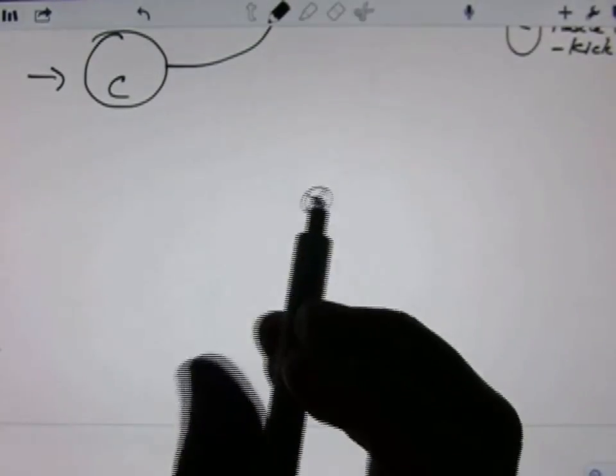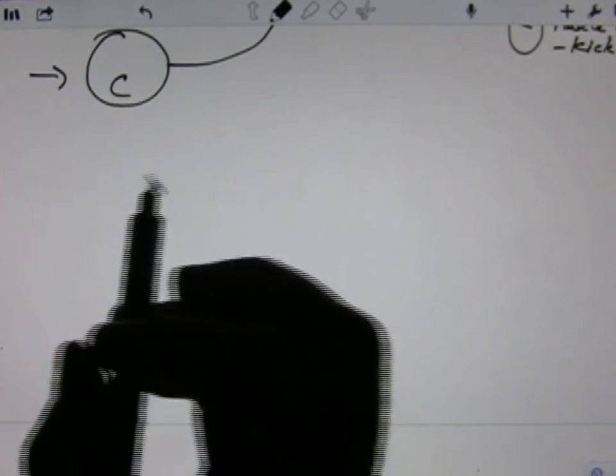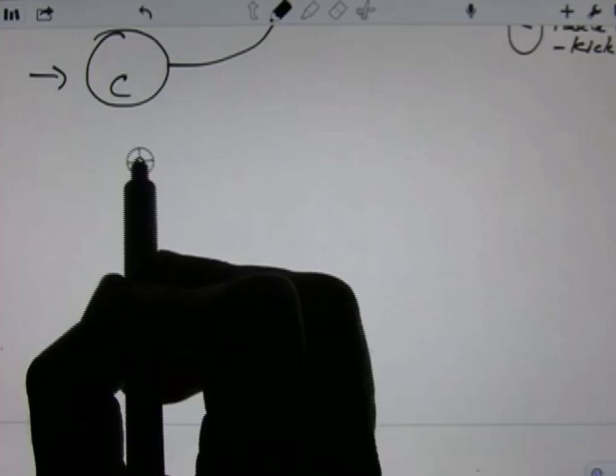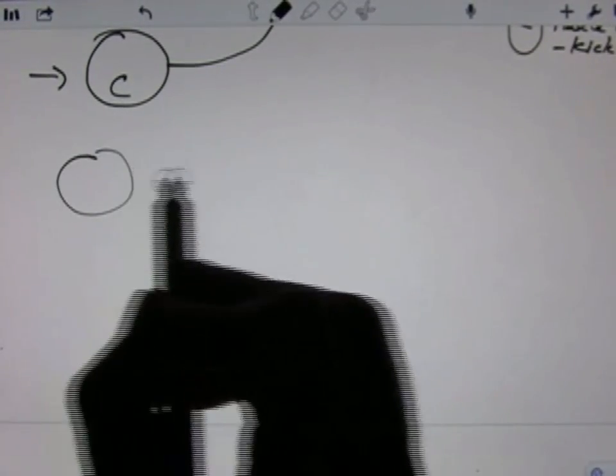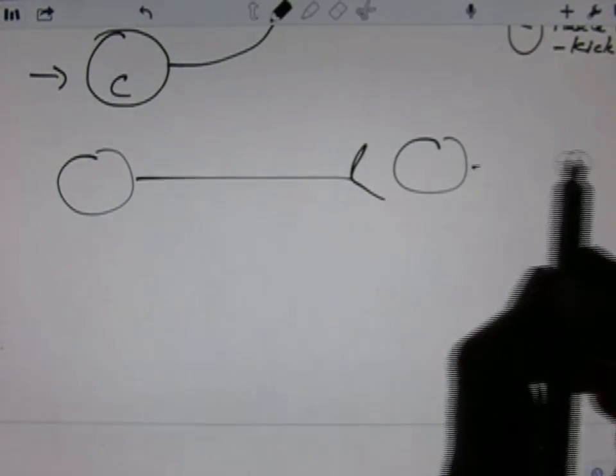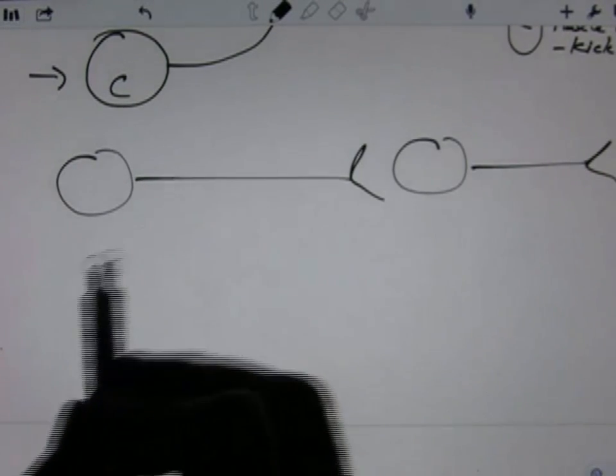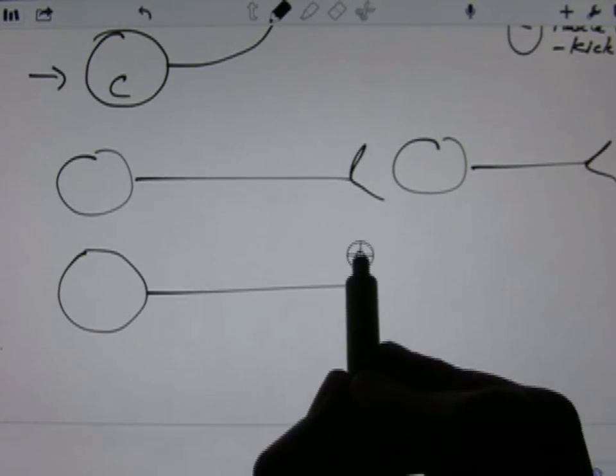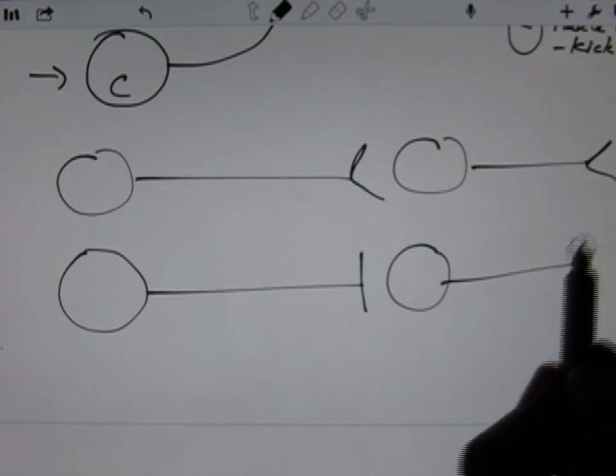So let's talk about some of the common elements of neural circuits. We have excitation. Inhibition.